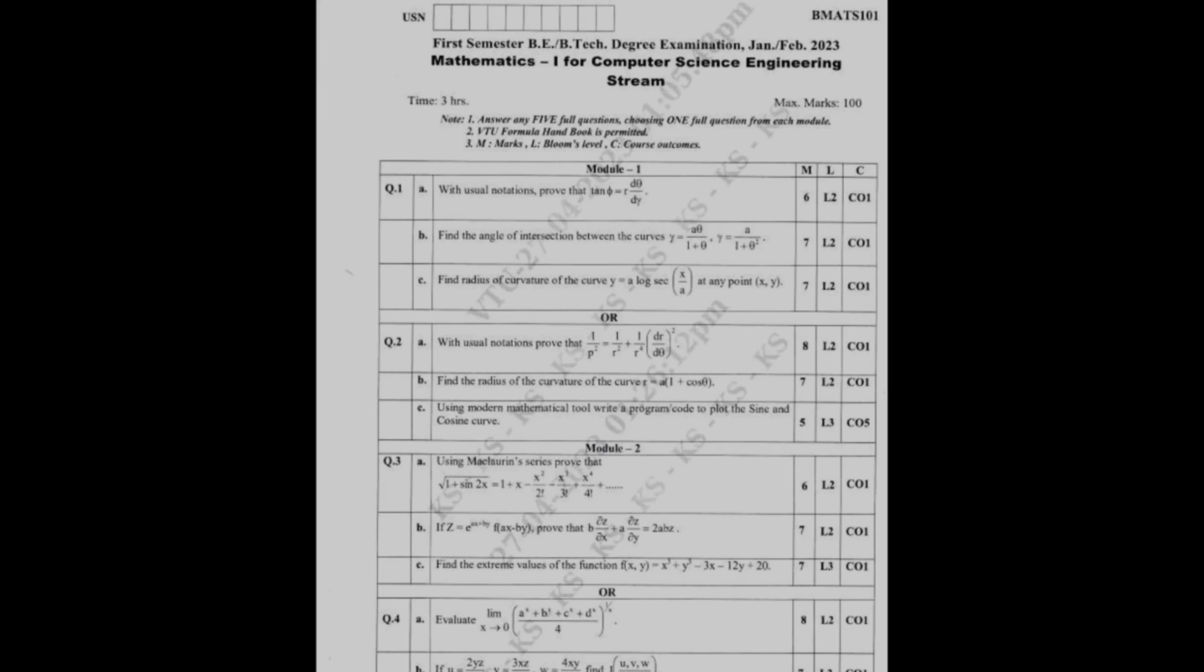Sometimes in the other part you will see 1/p² = 1/r² + (1/r⁴)(dr/dθ)². This is another derivation which you should prove. This may be in the upper part sometimes. These two derivations you should have a hold on.